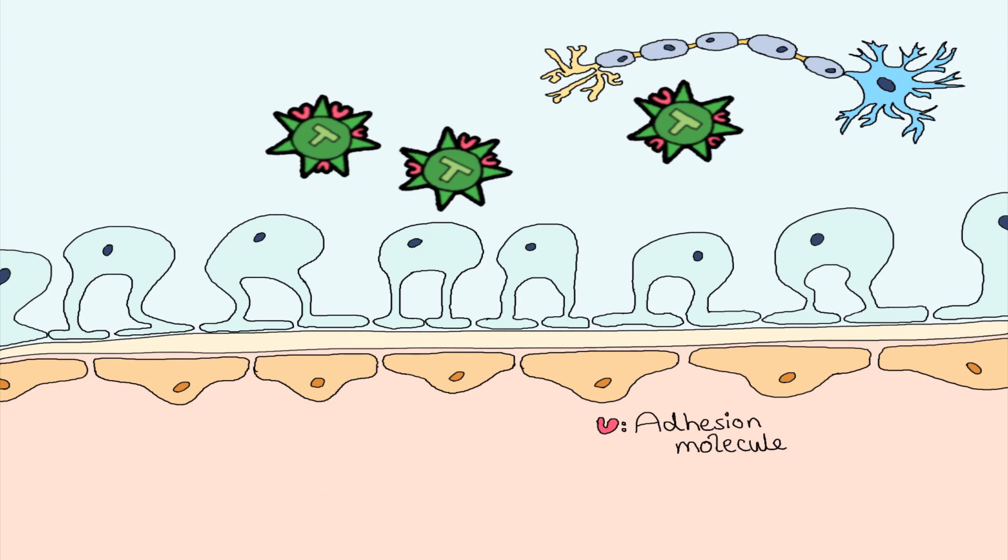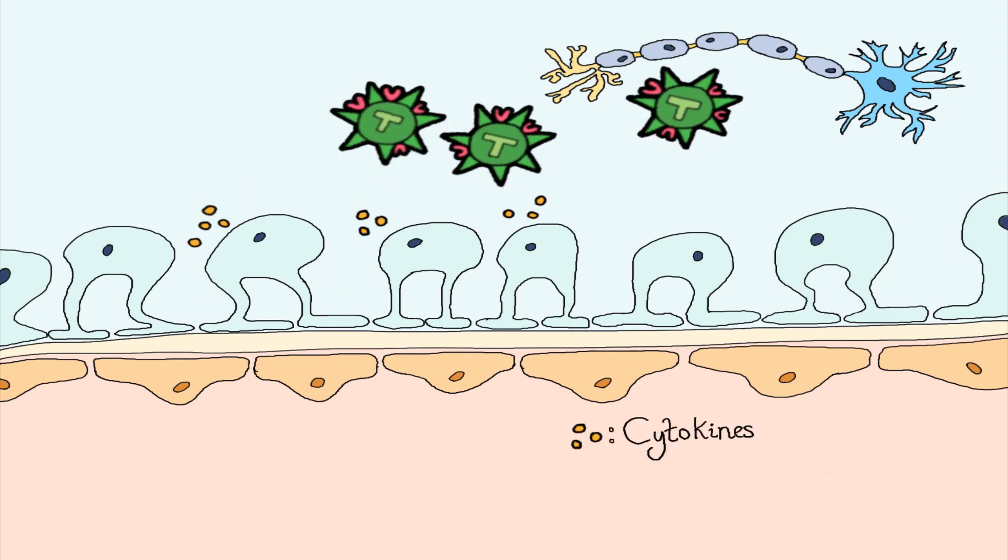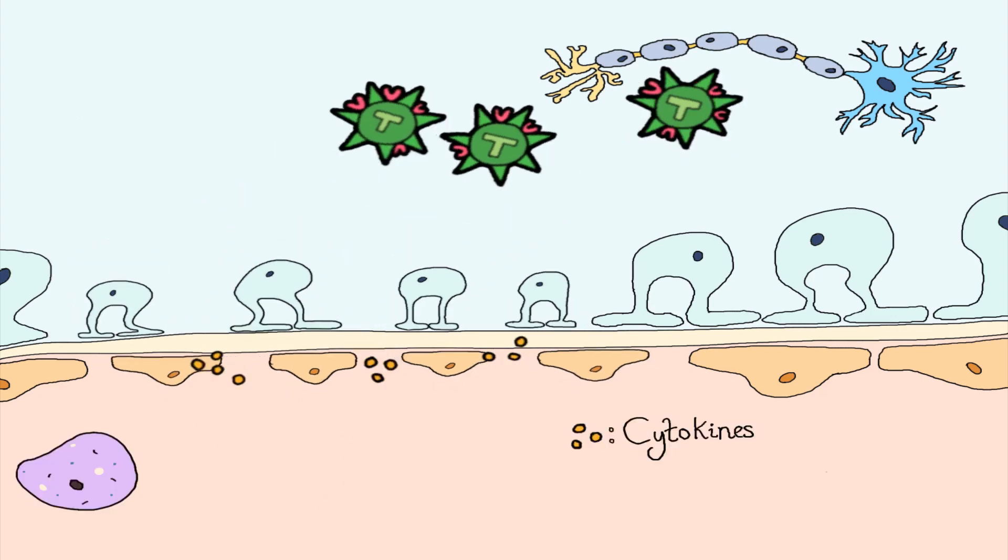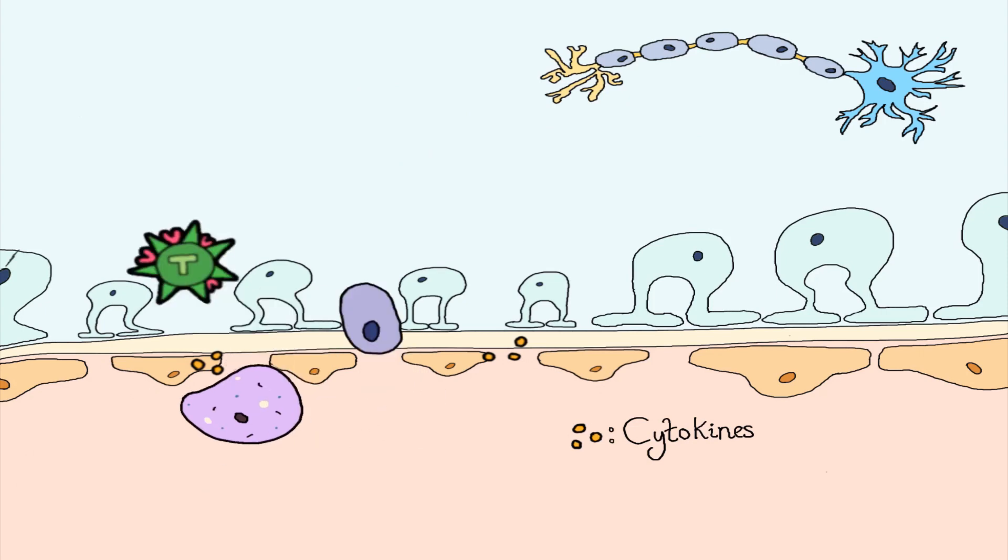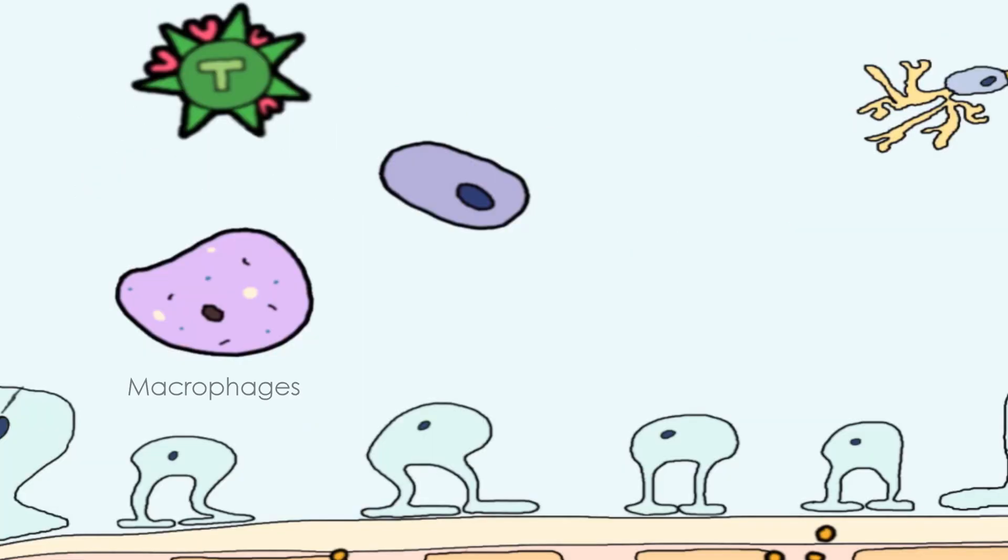The T-cells then release special signalling molecules called cytokines, which dilate blood vessels and create bigger holes in the net, allowing other immune cells like macrophages, B-cells and more T-cells past.